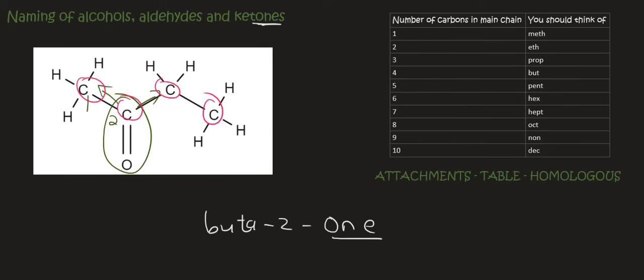And then also we're going to add the word AN. So it's going to be butan. And then on carbon number 2 there is the functional part. And so we say butan-2-one.